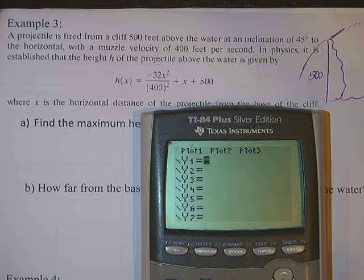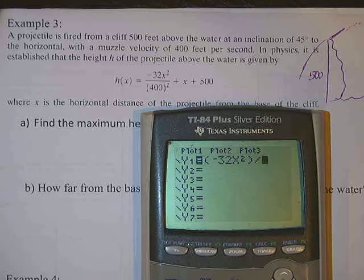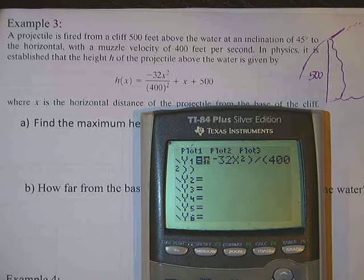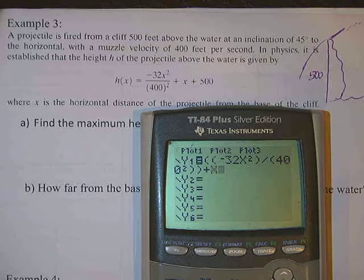So here we go. Clear out all the stuff you have here. Open quantity, negative 32x square, close it, because that's the numerator. Divide it by 400 square. So 400 square. So close that. I'm going to do another parenthesis for this. This is a division problem. So I just want to add another set of parenthesis. So plus x, then plus 500.